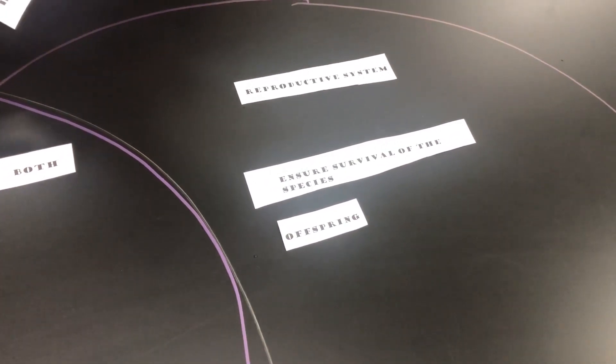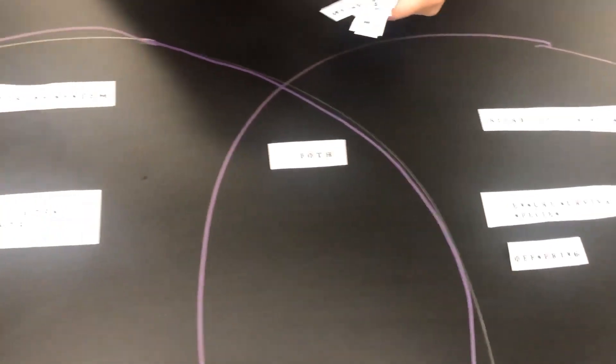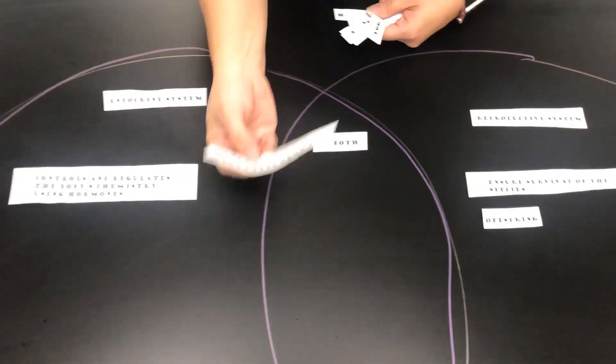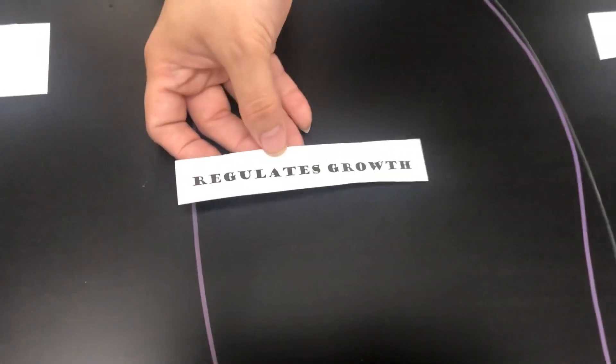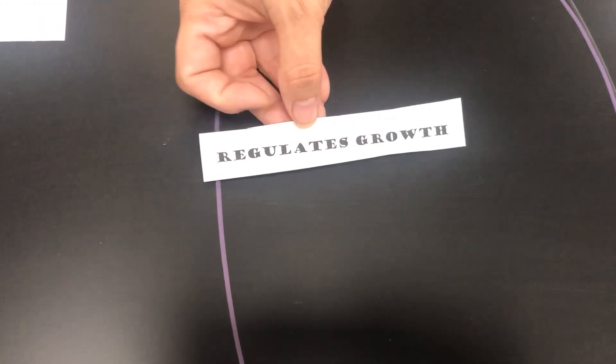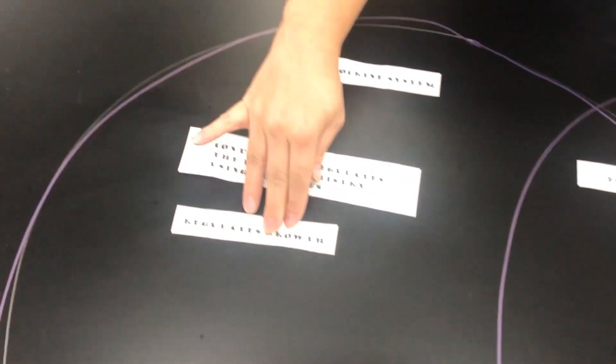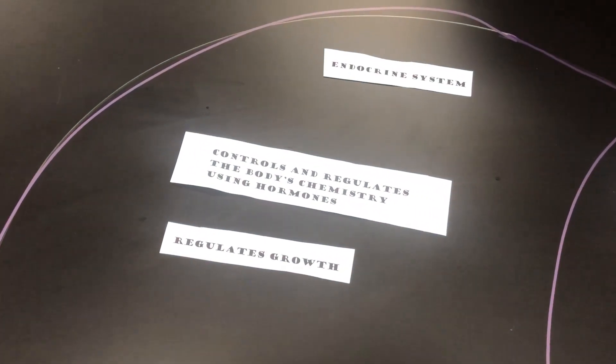Out of reproductive and endocrine system, the one that regulates our growth, that would be the endocrine system using hormones.